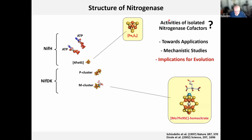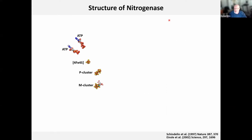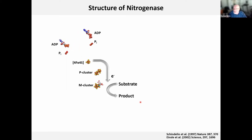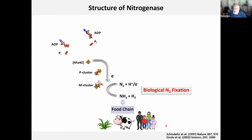Before getting into this topic, let me finish the introduction to the protein. When these clusters are embedded in the protein, they form a pathway in these three iron sulfur cluster-containing proteins, allowing an ATP-driven transfer of electrons that leads to the reduction of substrate to product. Nitrogenase is best known for biological nitrogen fixation, where it converts nitrogen to ammonia, making this essential element available for the entire food chain.